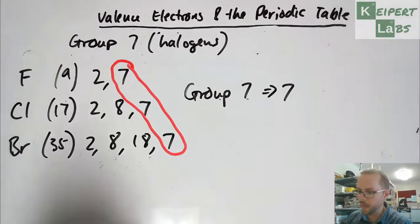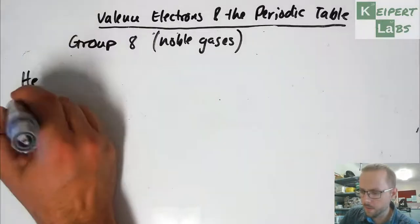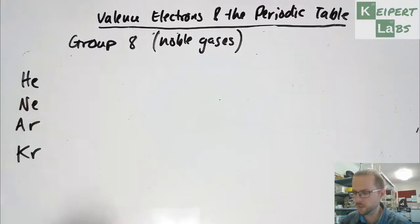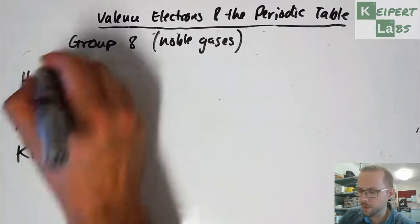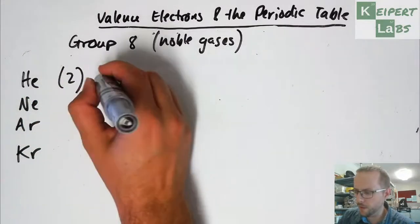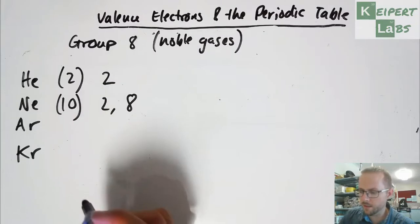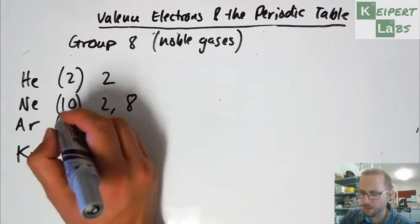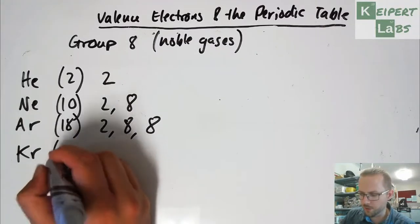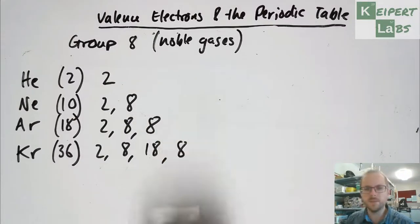Okay, now let's do group eight. So for group eight, now I'm going to do helium, neon, argon, and krypton. So what we see, helium's got an atomic number of two, so an atomic number of two, and we fill in two electrons. Neon's got an atomic number of ten, so we go two, and then eight. Argon has an atomic number of 18, so two, eight, eight. Krypton has an atomic number of 36, two, eight, eighteen, eight.